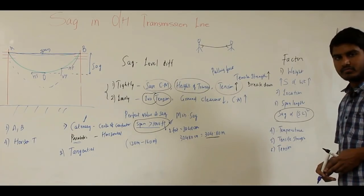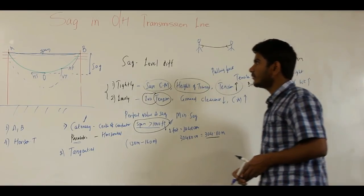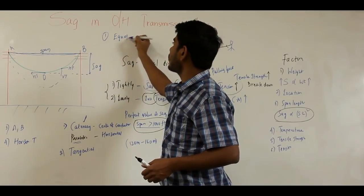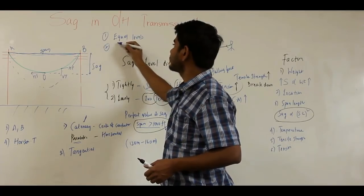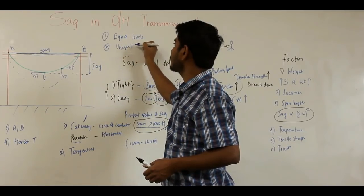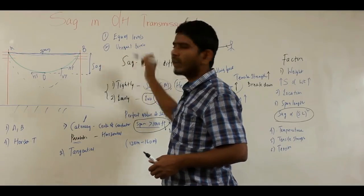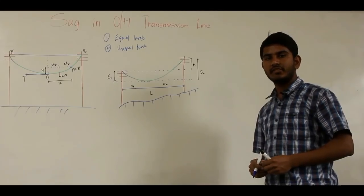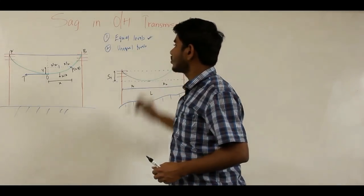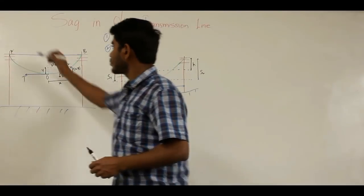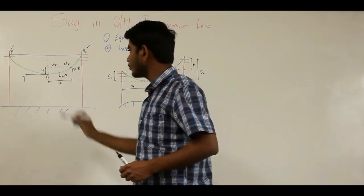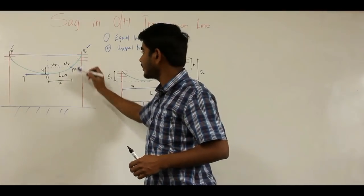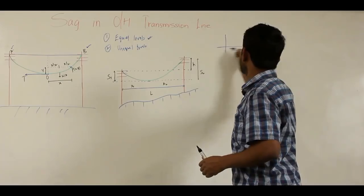Sag calculation can be made under two conditions: support points at equal levels, and support points at unequal levels. For support points at equal levels, consider the two support points A and B, with O as the lowest point on the conductor where tension T acts, and a point P on the conductor with coordinates X and Y, taking O as the origin. X is the horizontal distance and Y is the vertical distance from O to P.